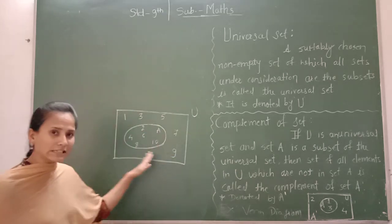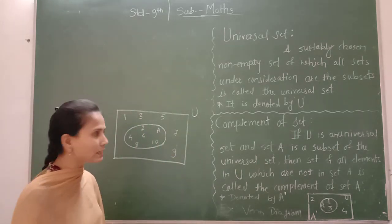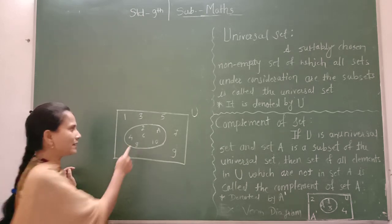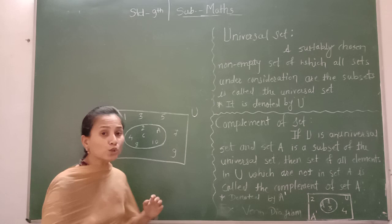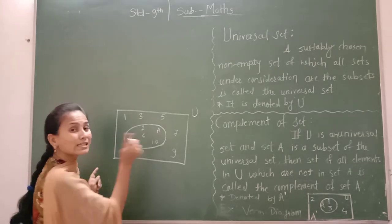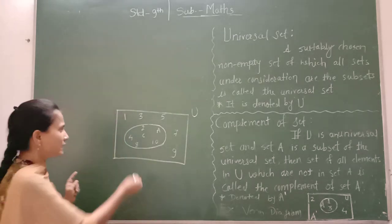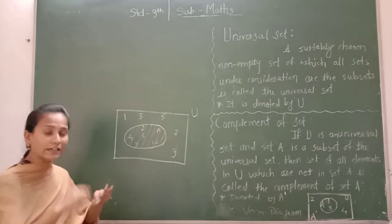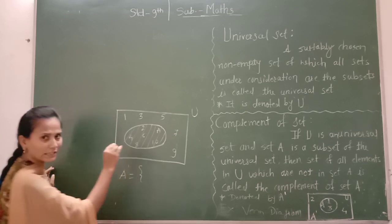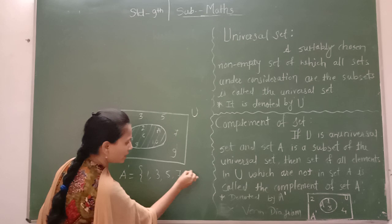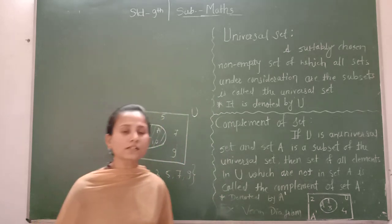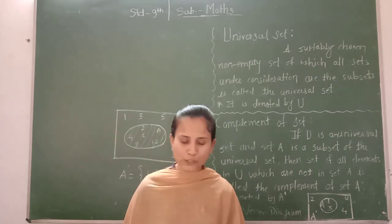Now see this example. The universal set contains all numbers 1 through 10. Set A contains only the even numbers: 2, 4, 6, 8, 10. So what will be the complement of A? Those elements present in set A will not come in the complement set. Except those, all remaining elements are in A complement. Therefore, A complement = {1, 3, 5, 7, 9}. I hope you understand the complement of a set. Remaining examples related to these sets we will see in the next video. Thank you so much.